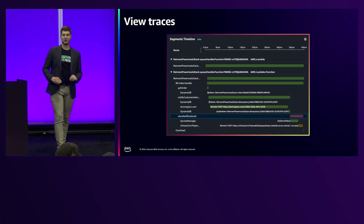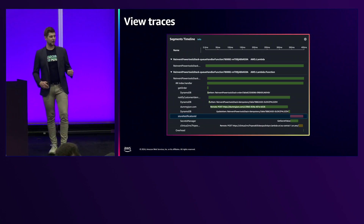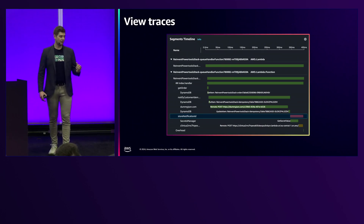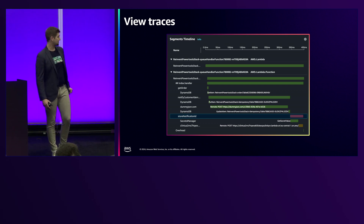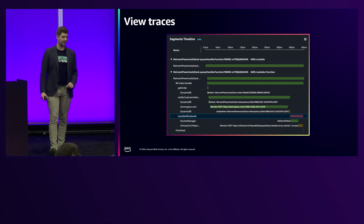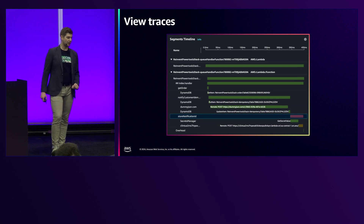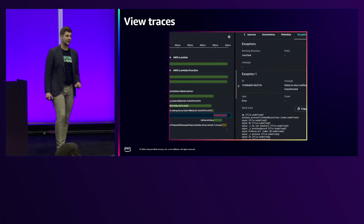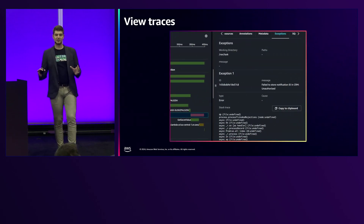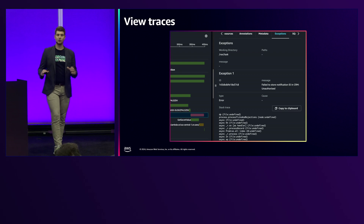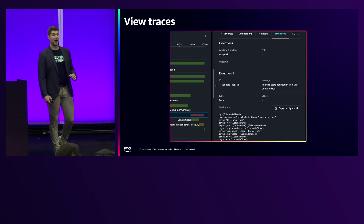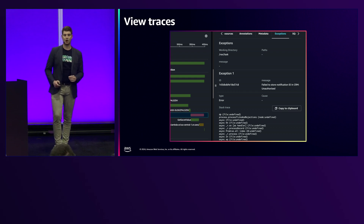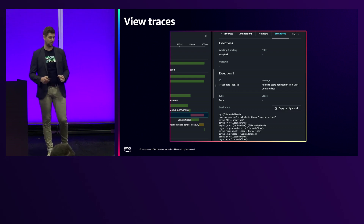We have a detailed view of our invocation and have separated segments for each part of the application. We can see our store notification ID call failed. So if we go deeper into this segment, we have our exception directly correlated with our tracing information and see 'failed to store notification ID in CRM — unauthorized.' So something happened with the authorization to this external API call.